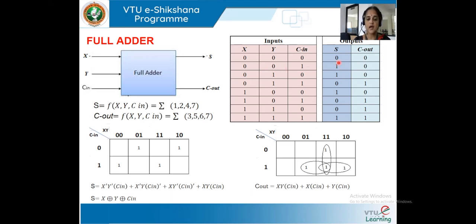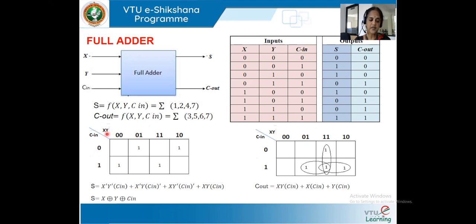For the full adder truth table with three inputs, when all are zero S is zero. When any one input is one, S is high. When two inputs are high, sum is zero and carry is one. We fill in the sum and carry columns accordingly. Once the truth table is done, we simplify using a K-map or Quine-McCluskey method. We draw a three-variable K-map with XY and C_in.